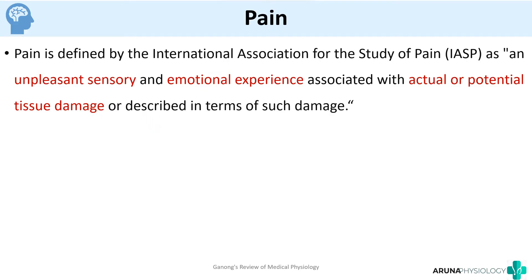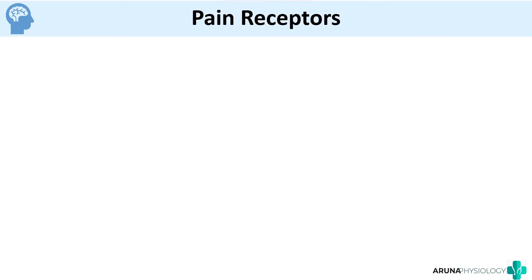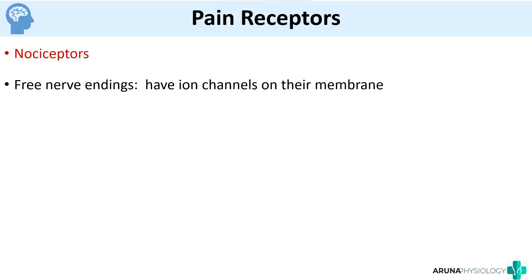In our pathway we will also see the reason for this emotional experience — not only sensory but emotional experience associated with actual or potential tissue damage. Like any pathway, we need to know about the origin, course, and termination. To know about the origin, we need to know about the receptors. Pain receptors are otherwise called nociceptors.